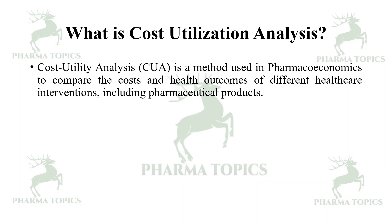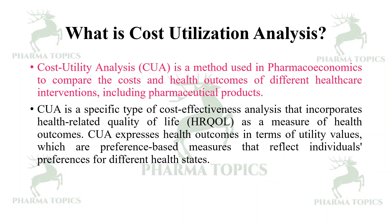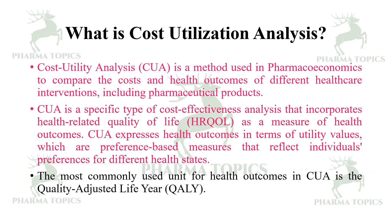What is cost utility analysis? Cost utility analysis (CUA) is a method used in pharmacoeconomics to compare the costs and health outcomes of different healthcare interventions, including pharmaceutical products. CUA is a specific type of cost-effectiveness analysis that incorporates health-related quality of life (HRQoL) as a measure of health outcomes. CUA expresses health outcomes in terms of utility values, which are preference-based measures reflecting the individual's preferences for different health states.